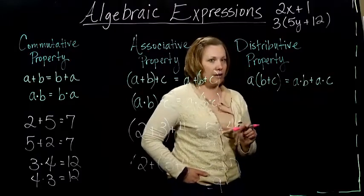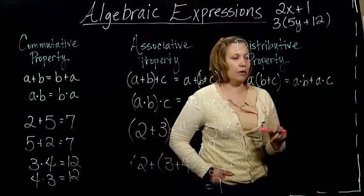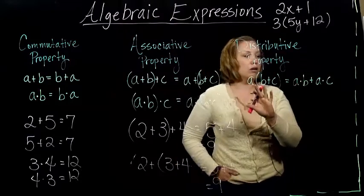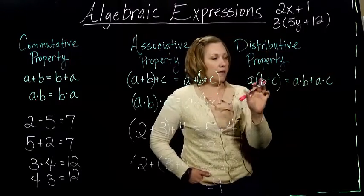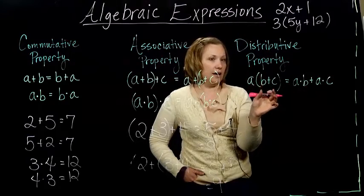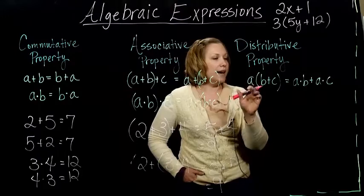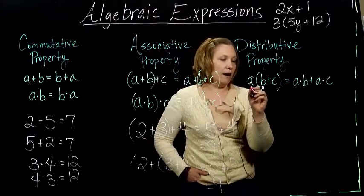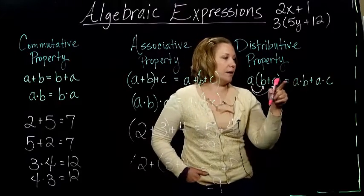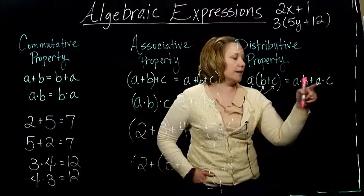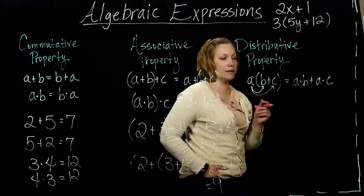The last property that we're going to use is one of the most useful ones because it connects multiplying and adding. So what it says is if I've got 2 numbers added together and then multiplied on the outside by another number, that's the same thing as if I multiplied the number on the outside by the first number on the inside and then also added that to the second number multiplied by the number on the outside.